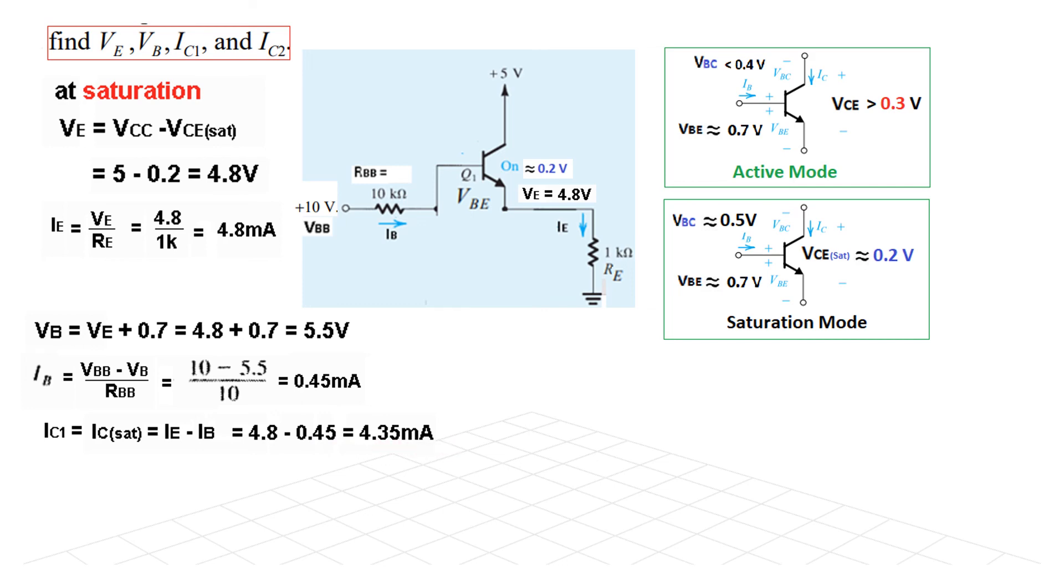Now this is for transistor number 1. Now since transistor 2 is off, therefore IC2 will be 0. So you can see we have found all the answers here: VE 4.8 volts, VB previous slide we found 5.5, current 4.3 milliampere, and the other current IC2 is 0. So I hope you have been able to follow this. Thank you.